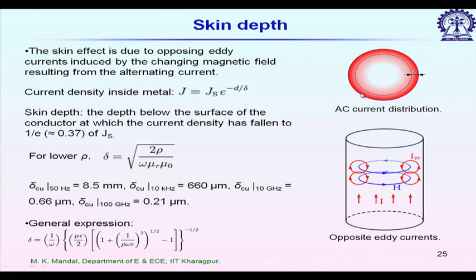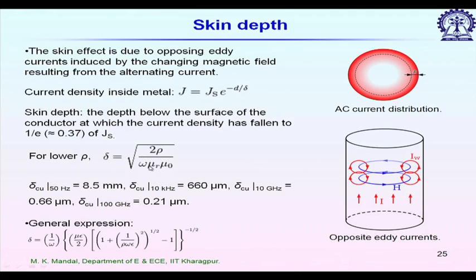As we go further inside the wire, the current density decreases exponentially according to J equals J_s times e to the power of minus d divided by delta. Here delta is the skin depth, given by the square root of two rho divided by omega mu_r mu_naught, where rho is the resistivity of the material. For metals with lower resistivity, replacing rho by sigma gives delta equals square root of two divided by omega sigma mu_r mu_naught. Importantly, skin depth is a function of omega — as frequency increases, skin depth decreases.